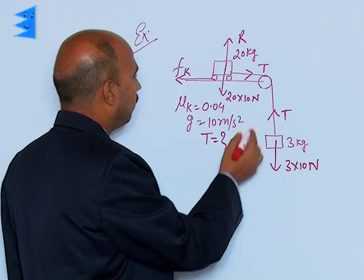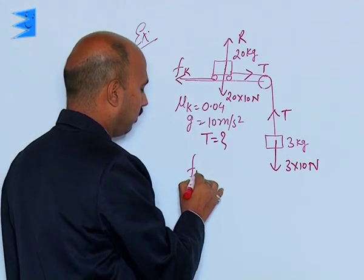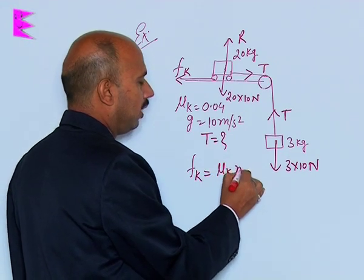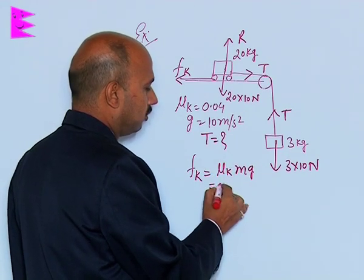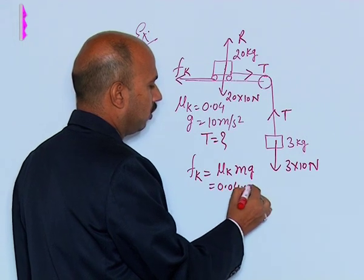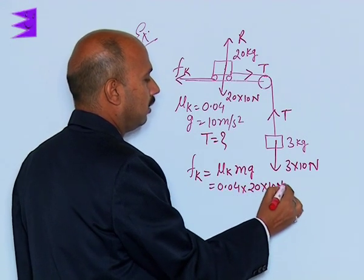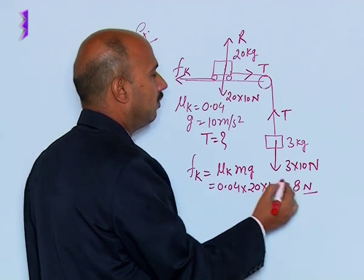We can make the equation here. First we can calculate frictional force Fk is equal to μk mg, that is 0.04 into here 20 into 10 Newton, that is equal to 8 Newton. That is the frictional force.